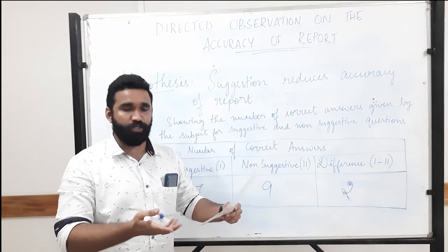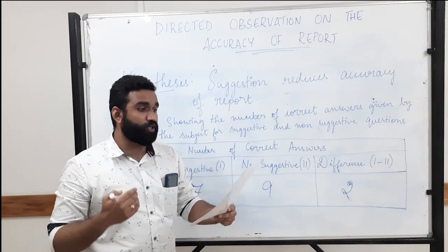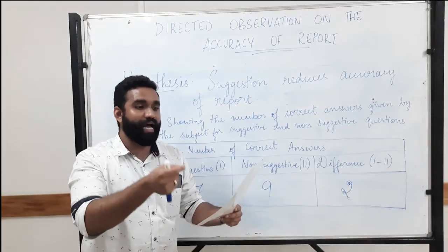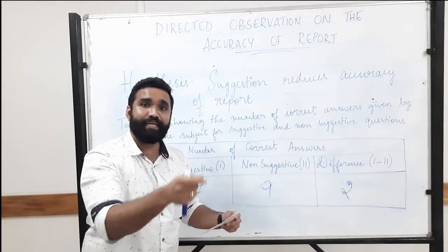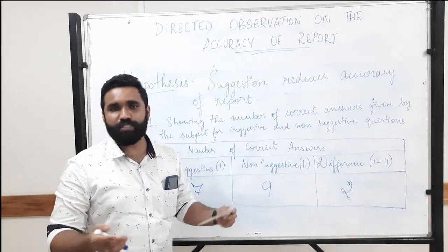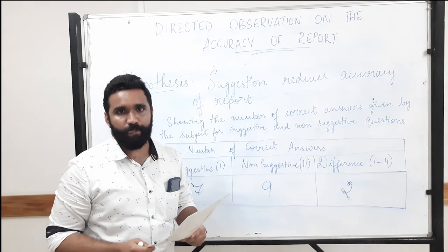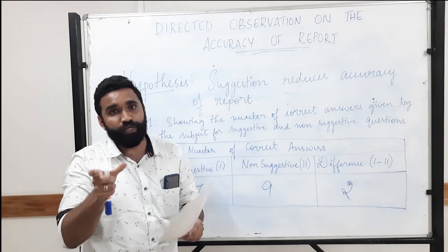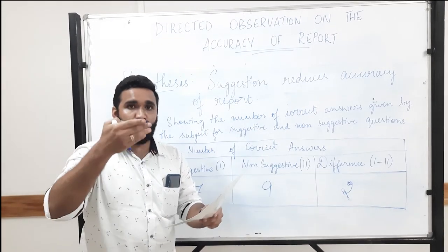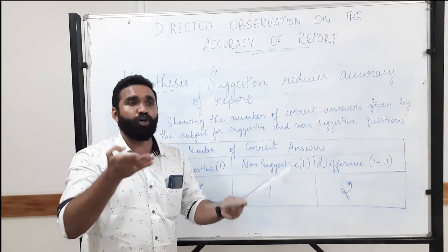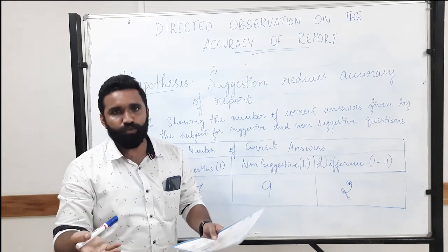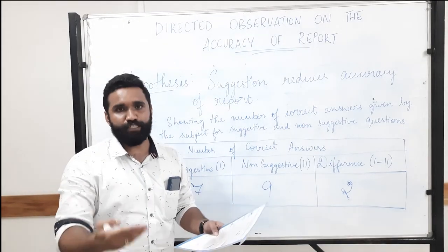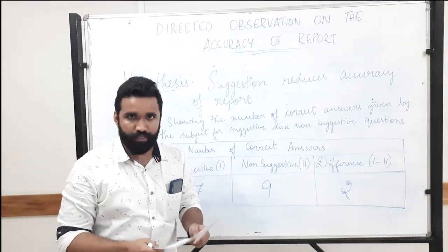Certain suggestive questions, like 'what was the color of the umbrella the man was holding?' — I'm suggesting there is an umbrella, but clearly in the picture there was a man but he didn't have an umbrella. This shows how when suggestions are given, the accuracy of report is reduced. Basically, the more suggestions you give, the less accurate the report about the picture will be.